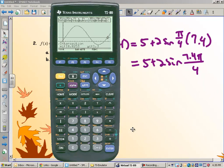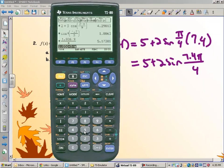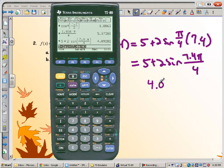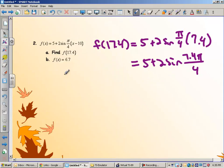5 plus 2 sine of 7.4 pi over 4. And plug that in on your calculator. Go to my home screen. 5 plus 2 sine of 7.4 pi divided by 4. Close parentheses. Looks like it's 4.092. Okay, now find f of x equals 6.7.